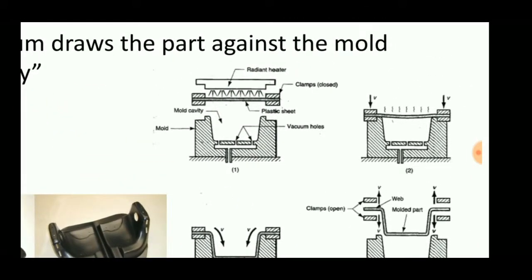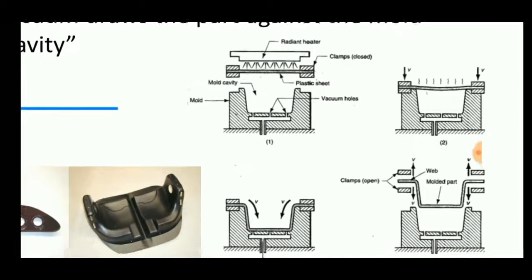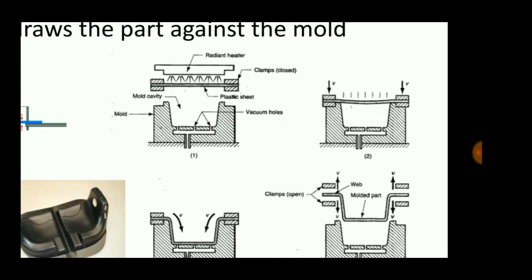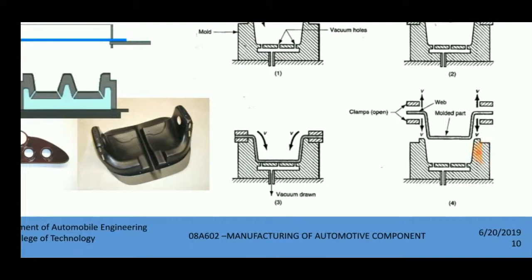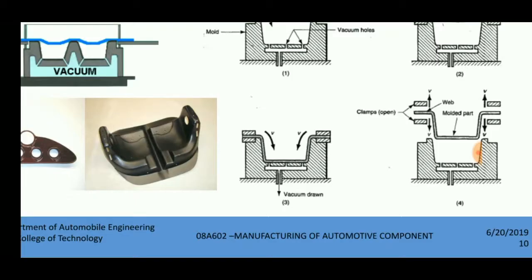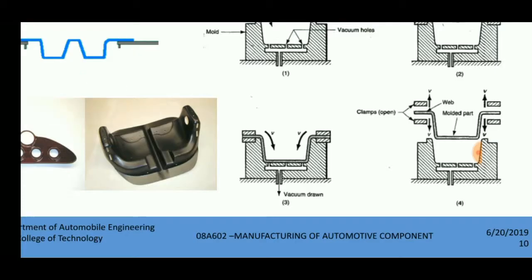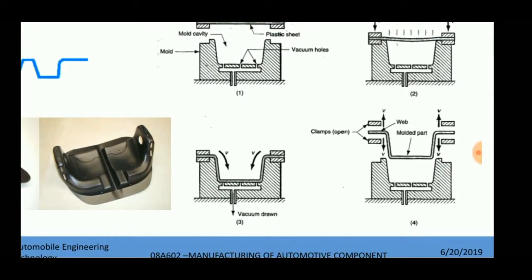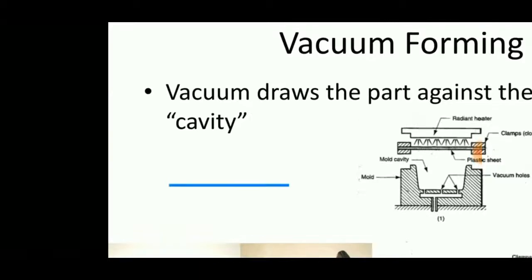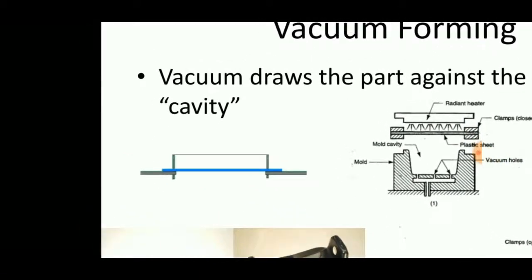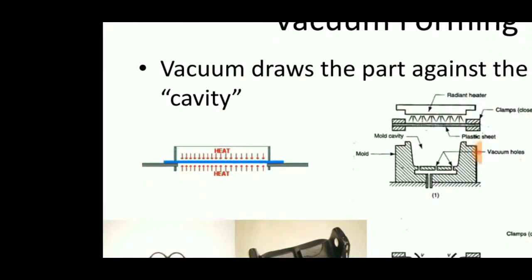First of all, the plastic sheet is placed on the mold cavity and heat radiation is imposed on the plastic sheet. Vacuum is drawn into the mold cavity so that the plastic sheet gets into the mold cavity and takes up the shape. Finally, the molded part is removed from it.